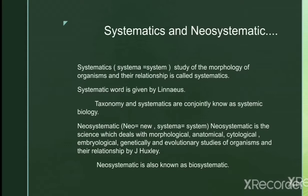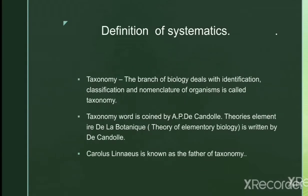New systematics was given by Julian Huxley and is also known as biosystematics. In this system, organisms are arranged including their anatomical, histological, embryological, physiological, cytological, cytochemical, genetical, ecological, geographical, and evolutionary aspects. Systematics also includes taxonomy, identification, classification, and nomenclature, as well as all other aspects dealing with different kinds of organisms and data accumulated about them.